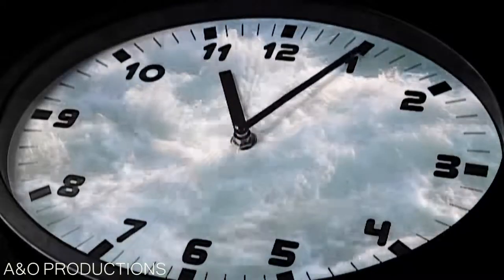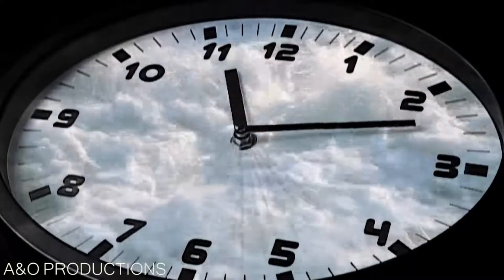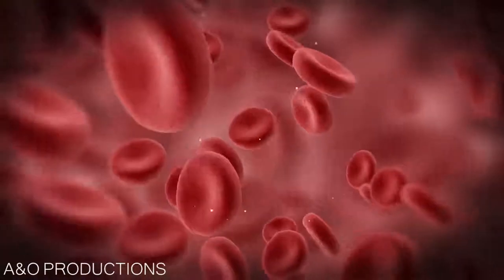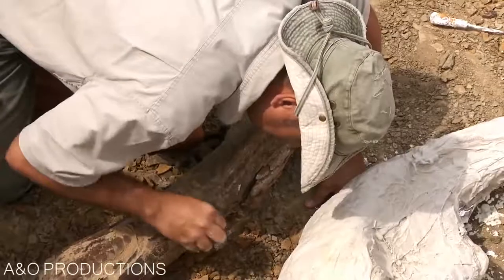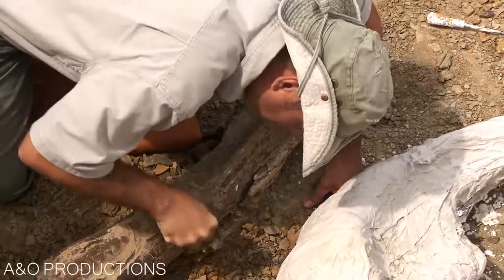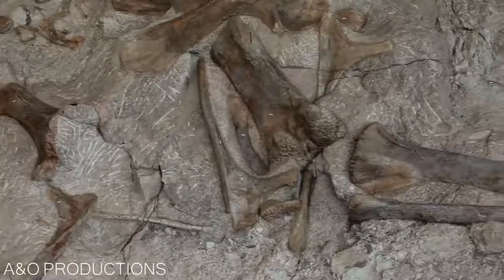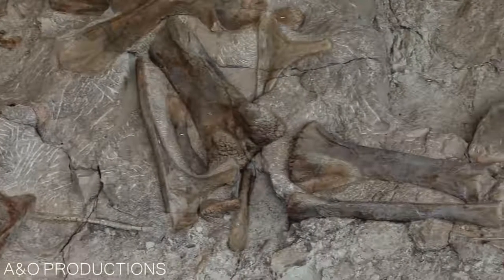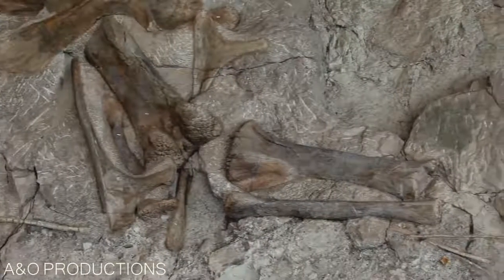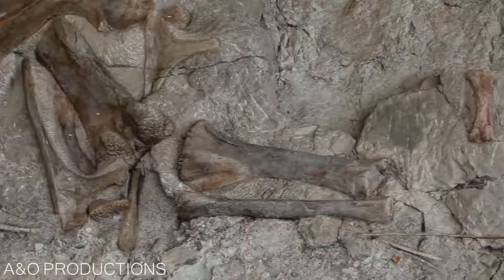Interestingly, other things that could only last around 10,000 years are soft tissue, blood cells, and DNA. Yet all these things were recently found in dinosaur bones. This shows that dinosaurs existed thousands of years ago, not 65 million years ago as evolutionists claim.